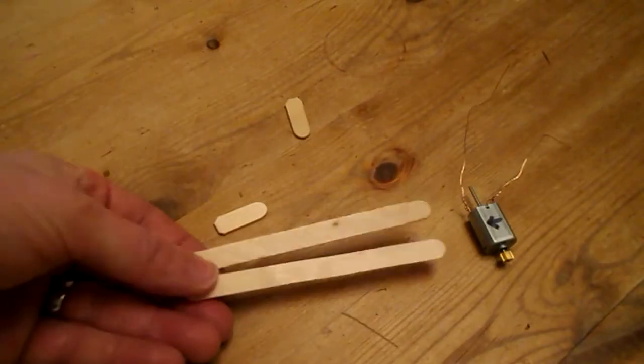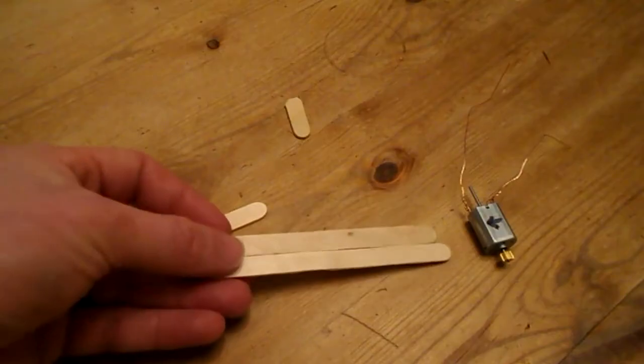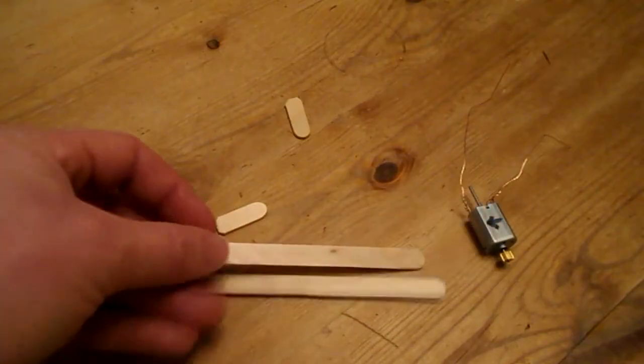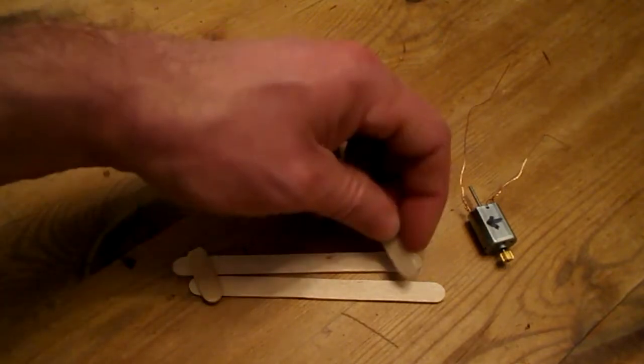Next thing we need to do is build a base for the car, or you could call it a chassis. About two popsicle sticks wide to do the base to hold the motor. So I've just cut these bits off as well so we can glue this all together and we can build the whole car on it.